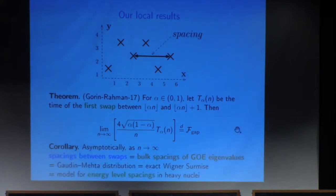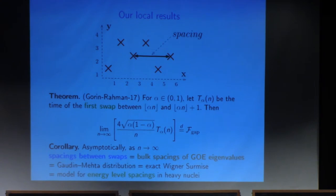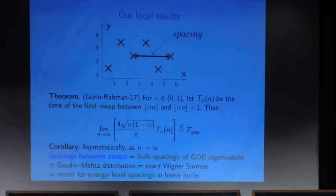These spacings between eigenvalues of symmetric matrices were studied starting from Wigner's work in the mid-20th century. Wigner said these spacings are a nice model for energy level spacings in heavy nuclei — that was his Wigner surmise, his guess for what the spacing distribution should be. With our results, one could say that Wigner could have equivalently said: the spacing between energy levels is just the spacing on sorting networks — it's the same object.